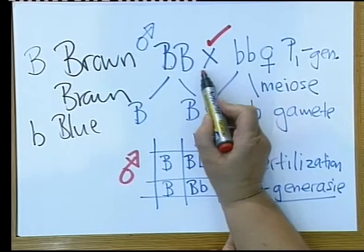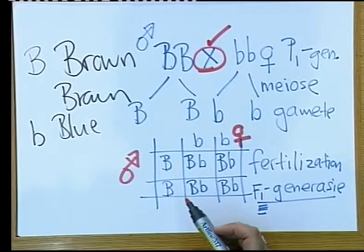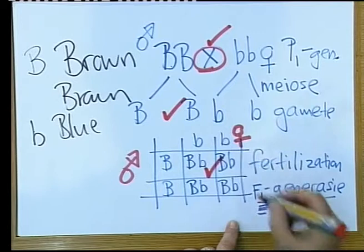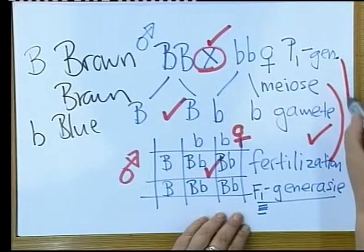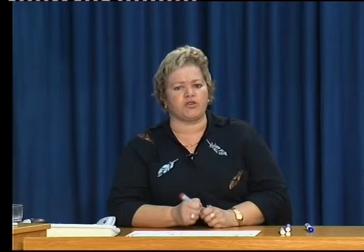You will get a mark if you have both the terms: meiosis and fertilization. You will get a mark if you have both the terms P1 and F1 generation. Can you see that these marks are gifts? You cannot afford to lose them at all.